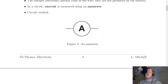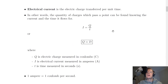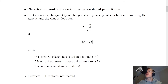If we want to measure current in a circuit, we need to use a device called an ammeter. Here's the circuit symbol for an ammeter — it's a circle with a capital A in it. The definition of electrical current is the electric charge transferred per unit time, represented in symbol form using I for current, Q for charge, and T for time.